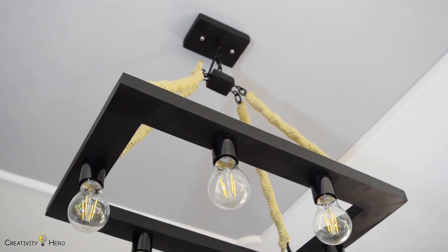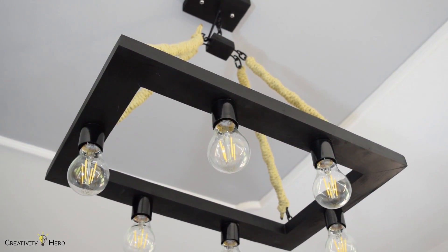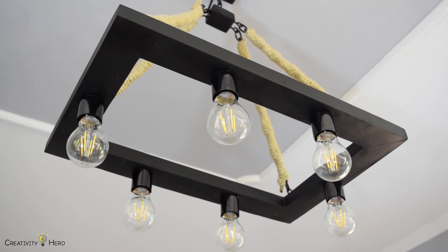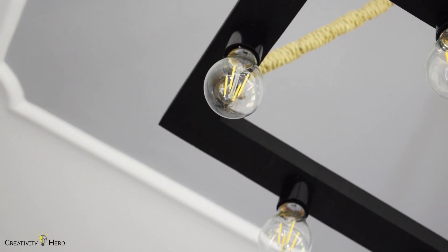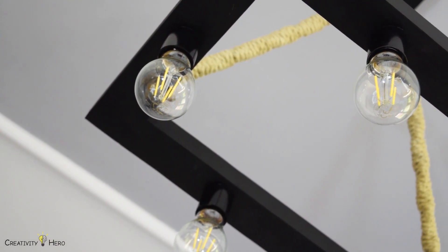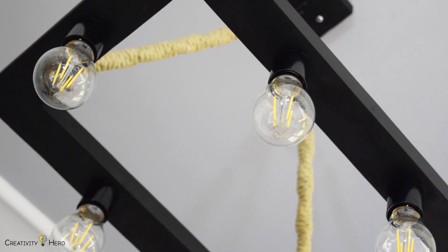For today's DIY project I'll be making a rustic industrial style hemp rope chandelier. I noticed this beautiful chandelier at the lighting store and I thought it would be a perfect addition to my living room.